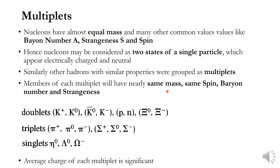Members of each family or each Multiplet will have nearly the same mass, same spin, Baryon number, and strangeness. For doublets — multiplets with two members — we have the K-plus and K-zero (the first K1 family), K0-bar and K-minus (the second K1 family), and the nucleons and the Xi family with Xi-zero and Xi-minus.